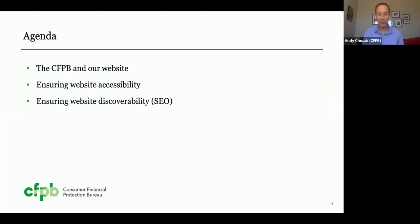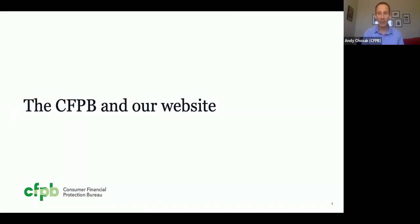Here's a brief overview of what we'll be talking about today. First, I'll give a short introduction to the CFPB and our website. Next, Sana and I will talk about how we ensure the accessibility of our website. Finally, Callan will discuss how we ensure the discoverability — or SEO — of our website. For those who aren't familiar, here's a brief introduction to the CFPB.